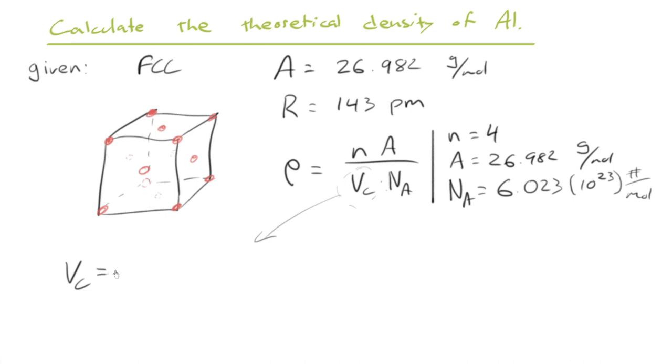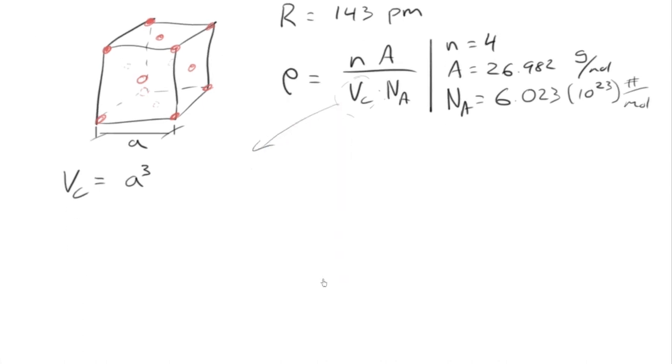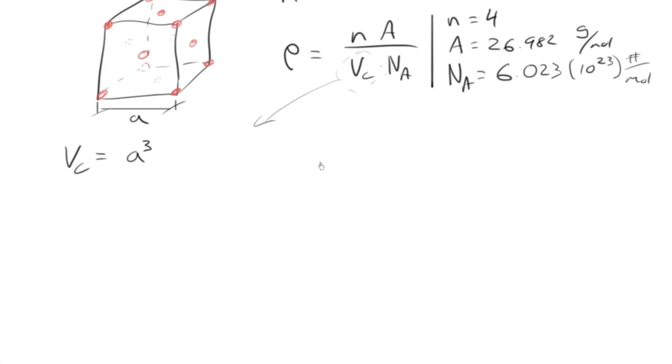But what's the volume of the unit cell? Well, the volume of the unit cell is going to be this lattice parameter here. A cubed, I mean. A cubed. Do we know A directly? No, we don't. We don't yet. We have the radius.